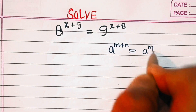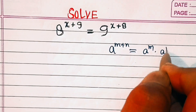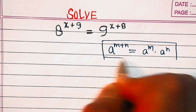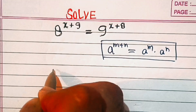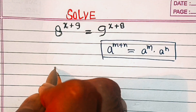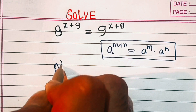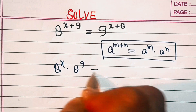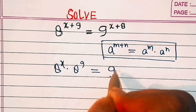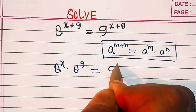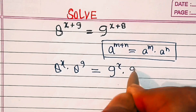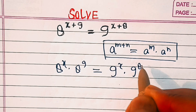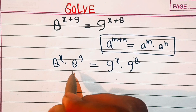So we can write the left side as 8 power x into 8 power 9, and the right side can be written as 9 power x into 9 power 8.